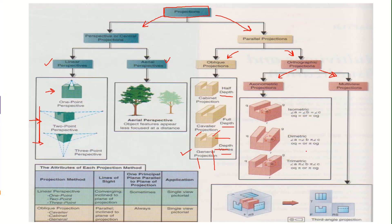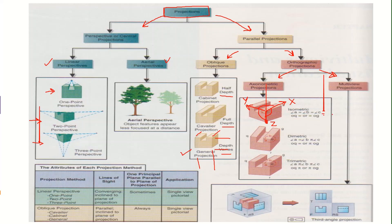Orthographic projections are further classified into axonometric and multi-view projections. Axonometric projections, typically used in CAD solid modeling software, utilize the angles between the three orthogonal axes. If you measure the angle between axes x, y, and z projected onto a 2D plane and all angles are equal — each being 120 degrees, summing to 360 degrees — then the view is called an isometric view.